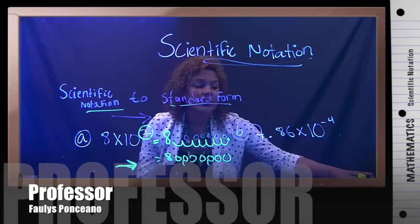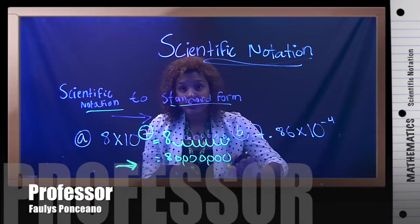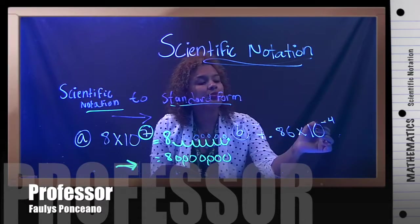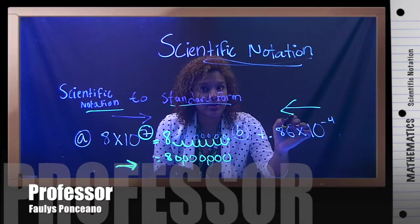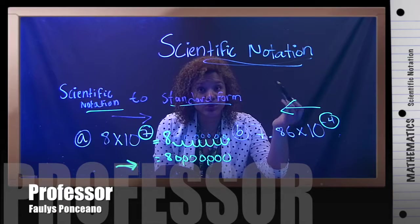Right here, you have 7.86 times 10 raised to the negative four. Okay. When the exponent is negative, that means you're going to go to the left. The four tells you the number of spaces, of zeros, you're going to move.